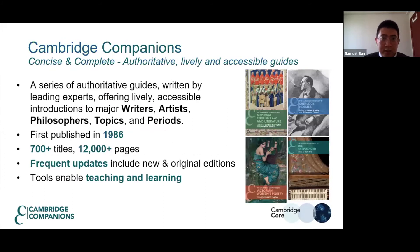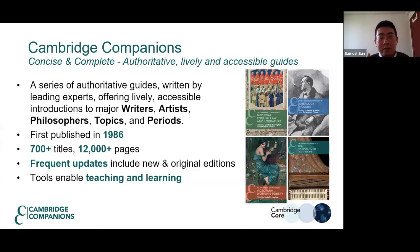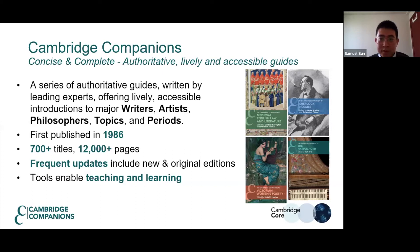Cambridge Companions Online gives you access to all 700 titles. This is a concise and complete collection written by leading experts, but the language is very lively and easy to understand. You can gain a good general understanding of topics, philosophers, and historical periods. This is an excellent resource for undergraduate students — it is easy to understand yet authoritative.